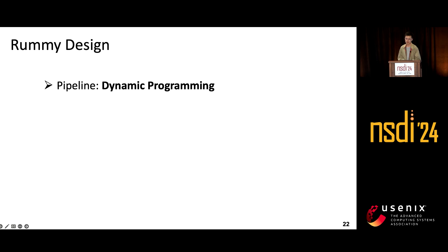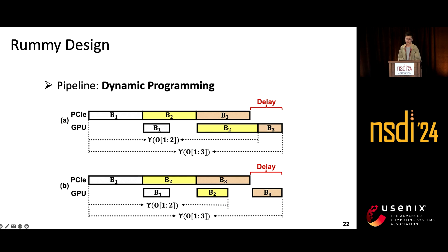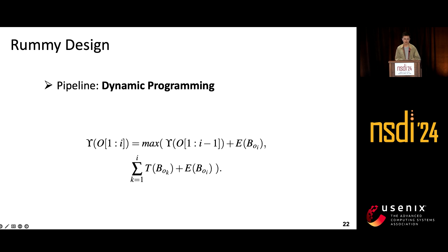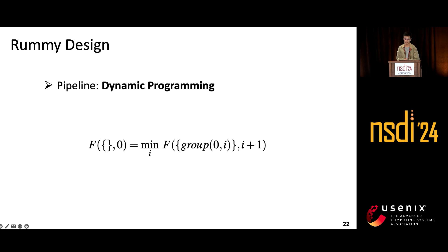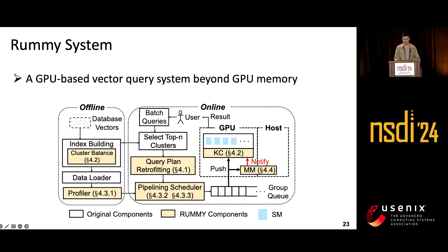With an optimal ordering and optimal grouping plan to maximize pipeline efficiency, and based on all four techniques, we designed RAMI — the first GPU-based vector query system beyond GPU memory. We implemented the system with 12,000 lines of C++ and CUDA code. The system workflow is shown here; you can refer to the paper for more details. We evaluate RAMI on AWS using an A100 GPU instance for overall performance evaluation, and V100 and T4 GPUs for ablation studies. We use the SIFT deep text datasets with 1 billion vectors for the large-scale workload.